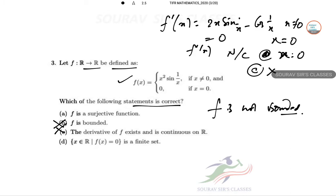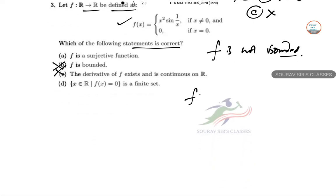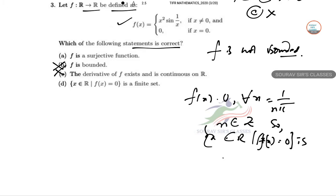Next if we proceed further and we find Fx equal to 0 for all values of x equal to 1 by n pi where n belongs to z. So x belongs to R given Fx equal to 0. So this is an infinite set. So as a result of that option D is also incorrect.